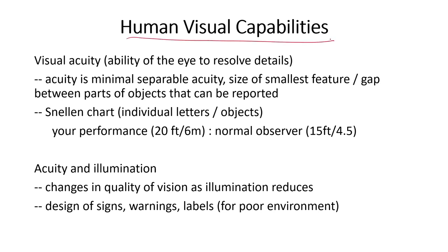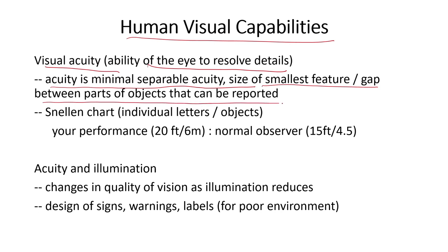Let us now talk about human visual capabilities. First, we will discuss visual acuity. Acuity is the ability of the eye to resolve details — specifically, it is the minimal separation acuity: the size of the smallest feature and the gap between parts of an object that can be reported. If I draw two objects, acuity is the smallest distance between the two regions that you can perceive so as to discriminate the two boundaries.